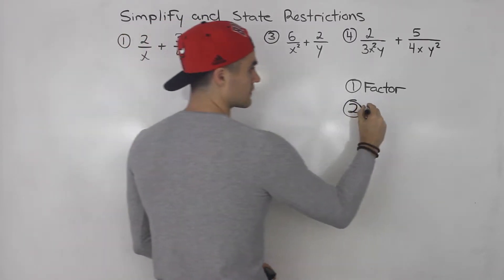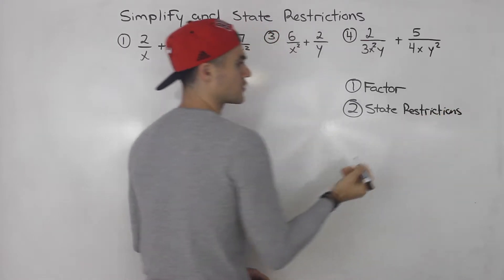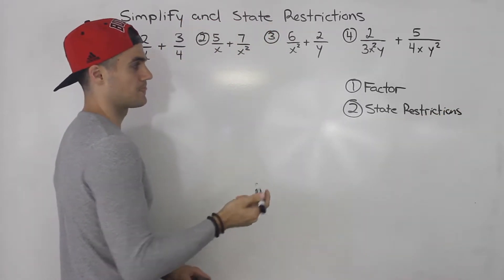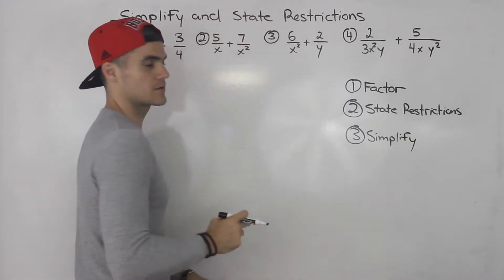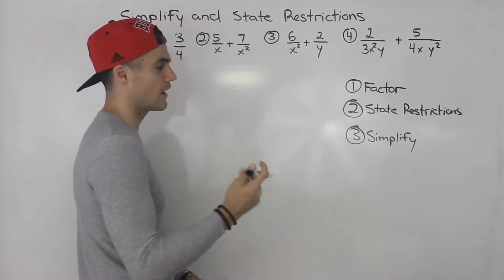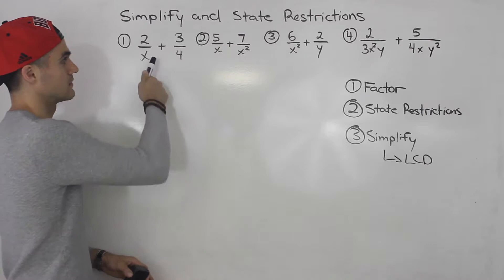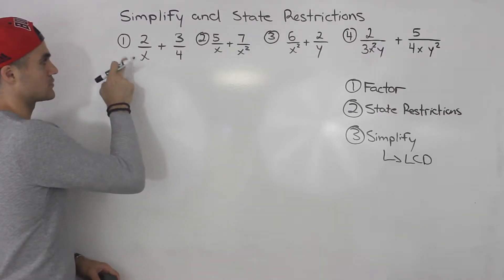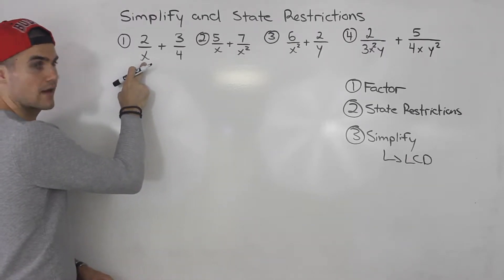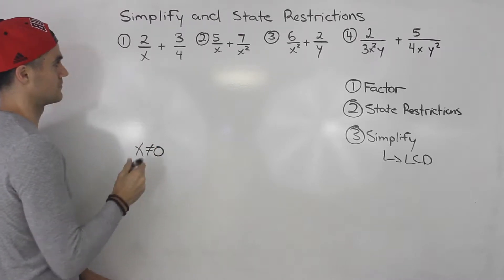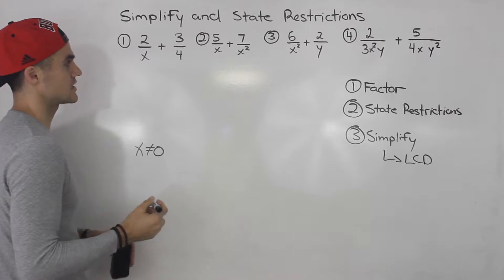You want to factor everything, then state your restrictions — that's when the denominator equals 0 — and then simplify. Starting with number 1: 2 over x plus 3 over 4. Everything is already factored. For restrictions, notice that x cannot equal 0, because that would make the denominator 0. The 4 is just a constant, so there are no restrictions from that.